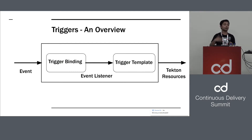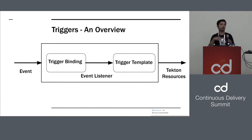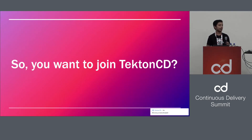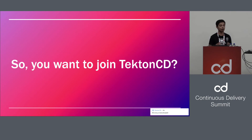A very good use case for this would be to build CI/CD systems — on git push or on PR open, run my tests. But I want to talk about something similar but slightly different. We've started using Triggers for this very recently, and it might be a problem that other open source projects run into too. As Tekton is growing and getting bigger, we have more and more people who want to join the Tekton CD org on GitHub.